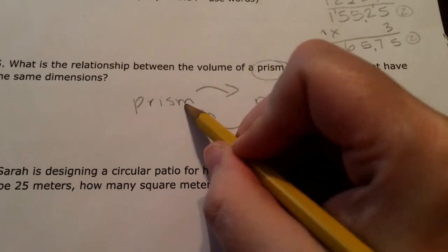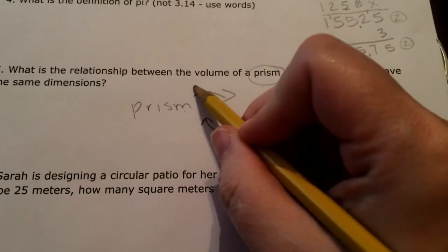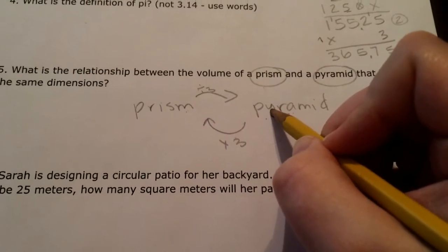So pyramid times three gives me a prism. So prism divided by three gives me a pyramid.